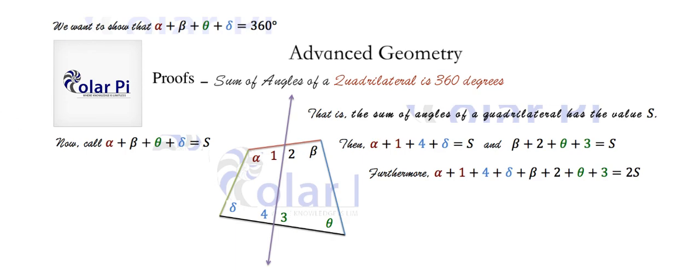And then from here, first, we can rearrange this sum of eight angles in this fashion. And then next, we see that since we said alpha plus beta plus theta plus delta is S, that this equation here, second to last equation, reduces to or simplifies to this equation, right?